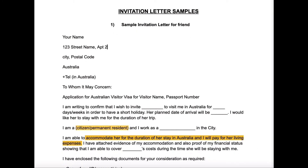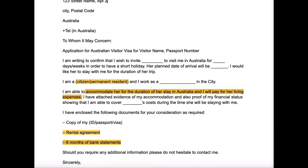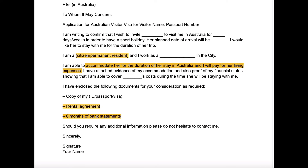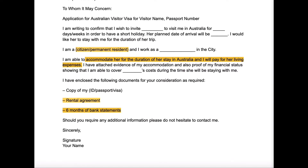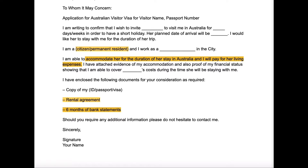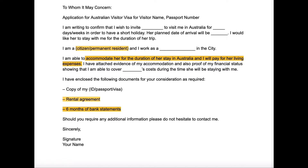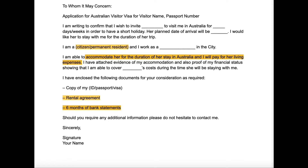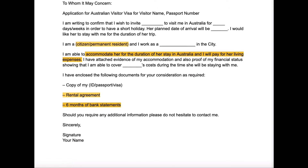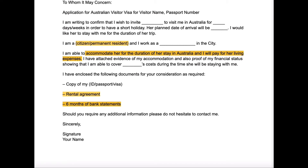Now let's go through some of the samples together. In total I've shared six sample letters and you can download them all from the link in the description box below. This first example is an invitation letter for inviting a friend to Australia. I've highlighted the important points that you must include. The person who's inviting has mentioned that he or she is a permanent resident and is able to take care of the accommodation and living expenses of the person being invited. To prove eligibility, they will be attaching bank statements and a rental agreement to show they have a place to accommodate the person coming from overseas.